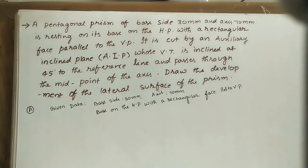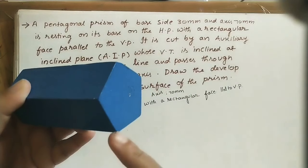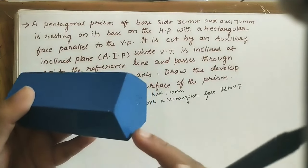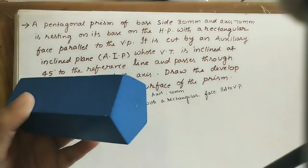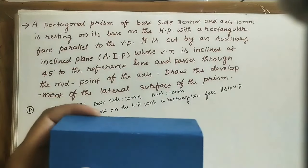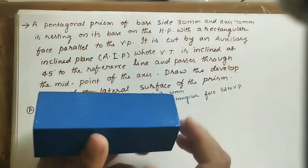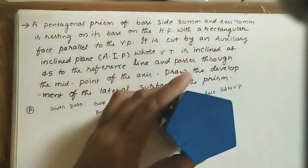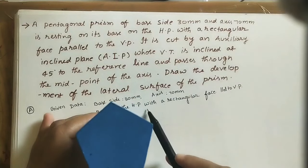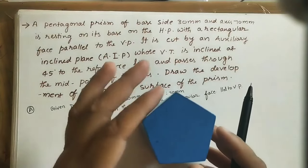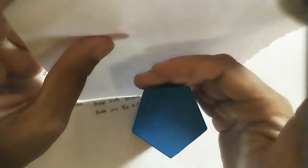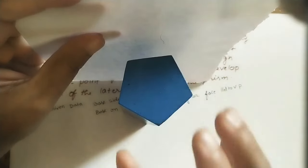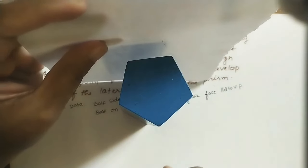Base side means each side is 30 mm — since it is a regular pentagon, all sides have equal length of 3 cm. The axis is 70 mm, which is the height of the prism — 7 cm. The base is on the HP (horizontal plane). With a rectangular face parallel to the VP (vertical plane), the pentagon is oriented so that one rectangular face is parallel to the vertical plane. We need to do the projections for this position — top view and front view.